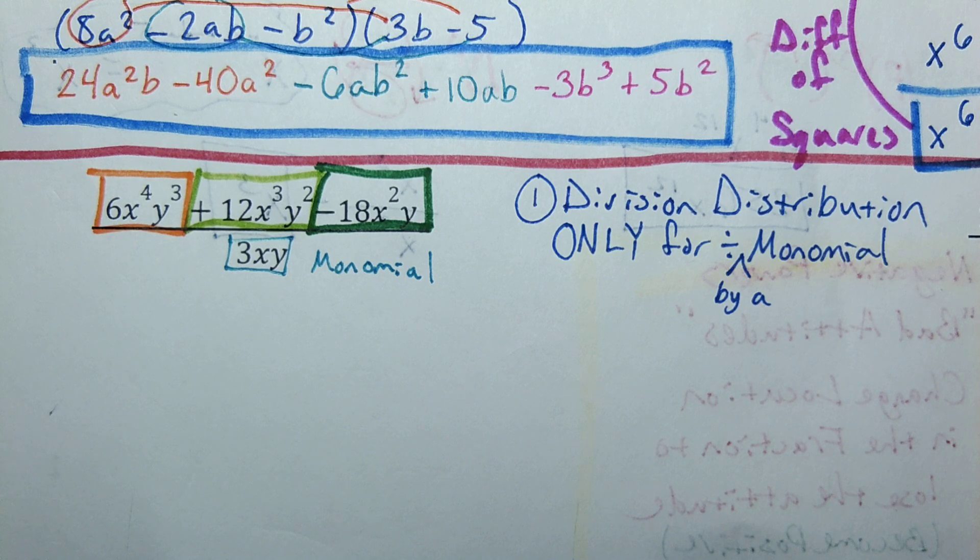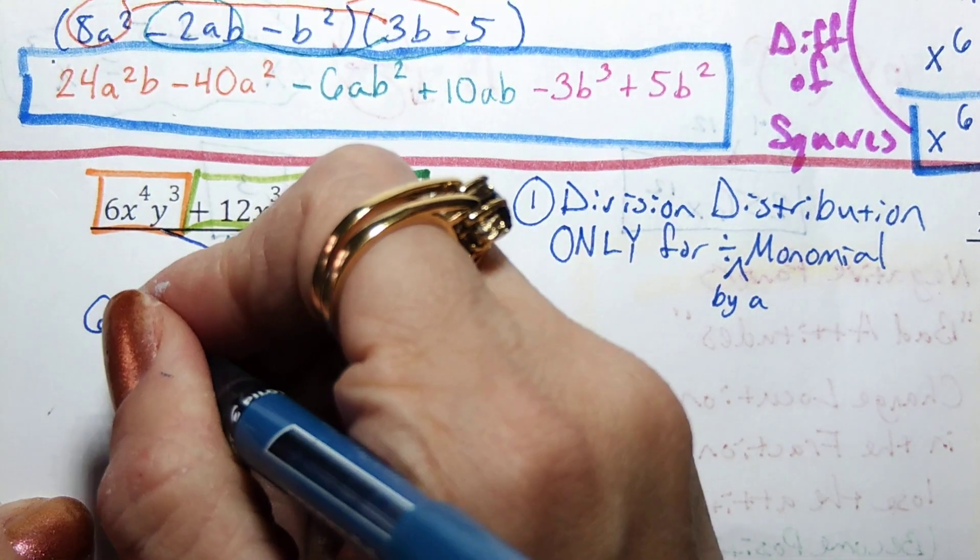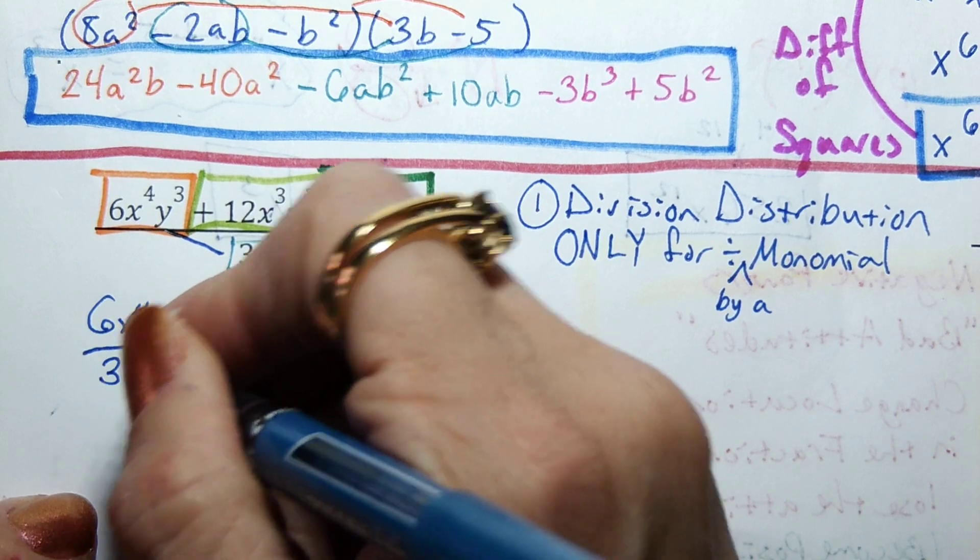So we're sort of doing what we did in the quadratic formula at the end. Where if I have two terms on the top and dividing by one thing on the bottom, we're going to divide each of those things on the top by that bottom number.